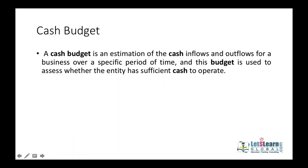A cash budget is an estimation — a forecast — of cash inflows and cash outflows from the business for a given period of time, be it a month, a quarter, or a year. When cash comes into the business for any reason, it is called a cash inflow. When cash goes out of the business for any reason, it is called a cash outflow.